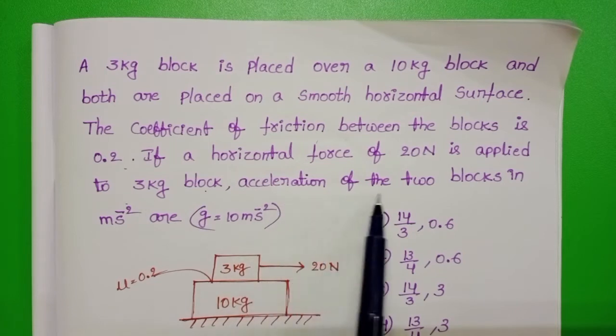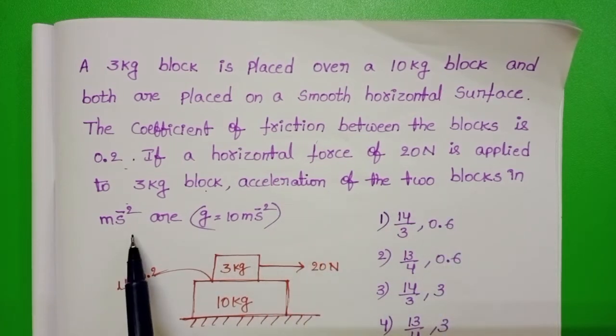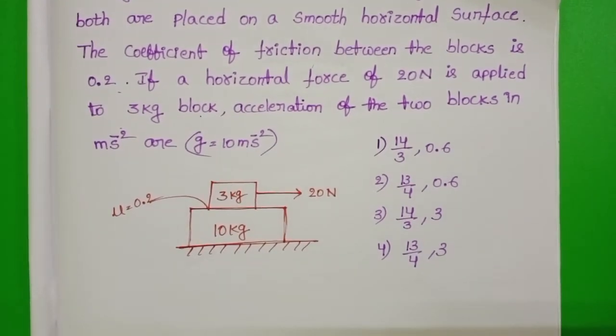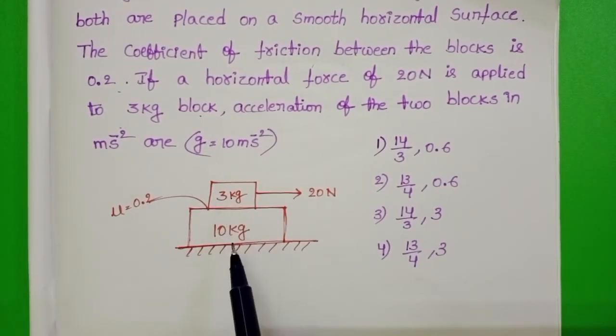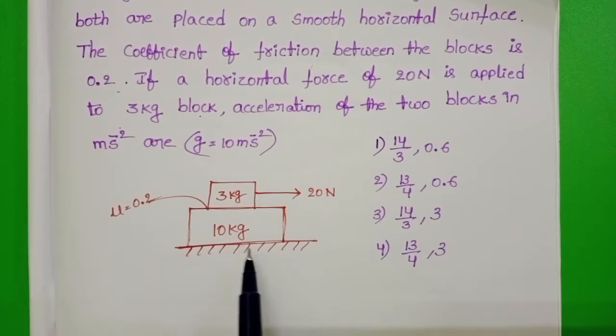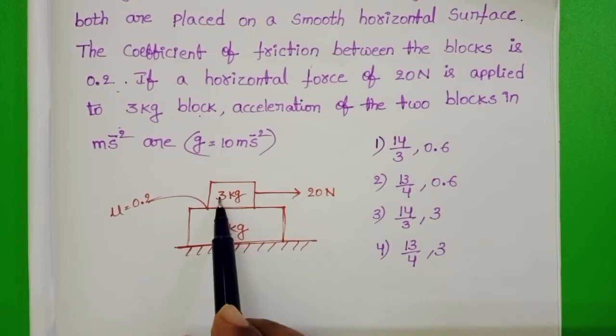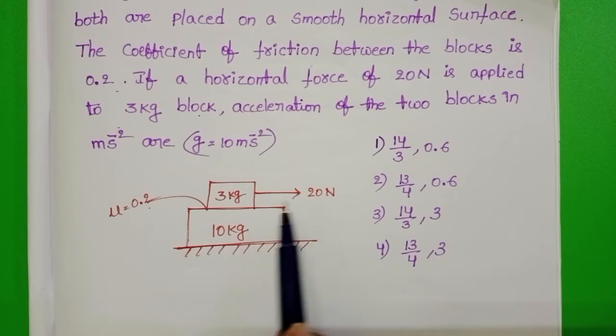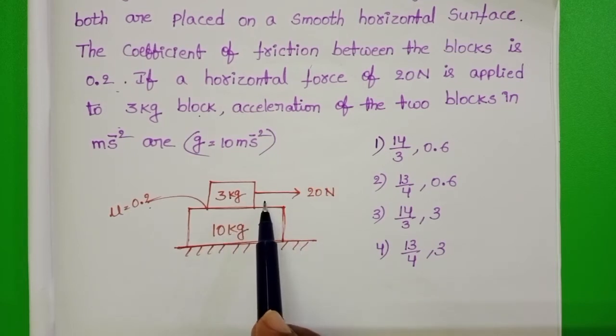acceleration of the 2 blocks in m per second square. This is the given diagram. 3 kg block is placed over 10 kg block. There is no frictional force between 10 kg and the horizontal surface, but frictional force exists between 3 kg and 10 kg. Coefficient of friction is 0.2. An external force is applied on the 3 kg block.